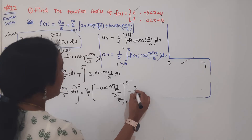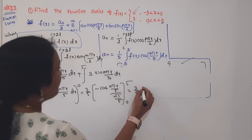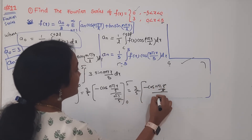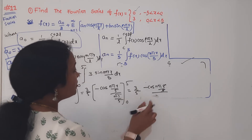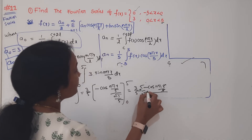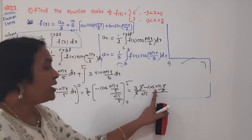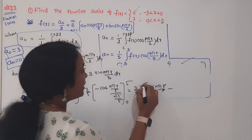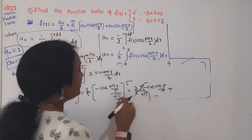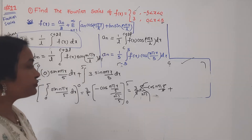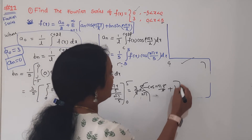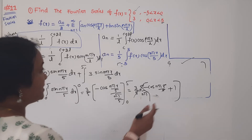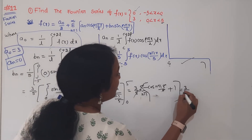When x lies in minus 5 to 0, the function is 0, so the first integral vanishes. For 0 to 5, the function is 3. The integration of sin(nπx/5) gives −cos(nπx/5) divided by nπ/5, with limits 0 to 5. This gives 3/5 × 5/(nπ) × [−cos(nπx/5)] from 0 to 5, i.e., 3/(nπ).